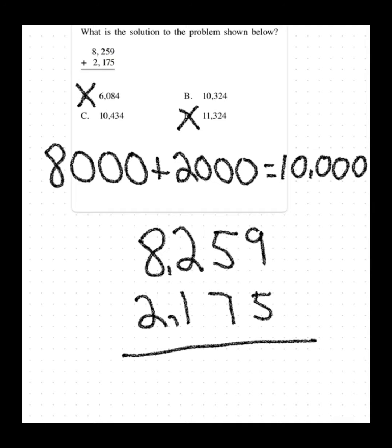I always start in the ones place. So 9 plus 5 equals 14. Write the 4 below. Bring the 1 over. 1 plus 5 plus 7, 13.